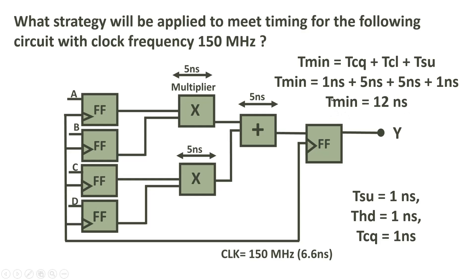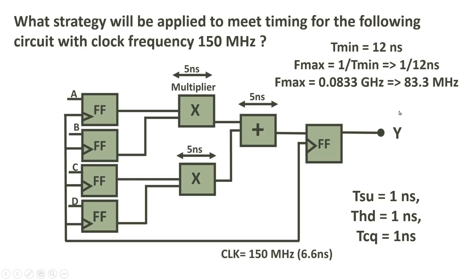Friends, here the minimum period of operation is 12 nanosecond. We cannot reduce the time period further. 12 is the minimum time period. And from here, very easily we can calculate the maximum operational frequency. Maximum operational frequency is equal to 1 by T minimum. So which is 1 by 12 nanosecond. So Fmax will be equal to 83.3 megahertz. But our target is 150 megahertz. So answer to your first question is, it cannot work at 150 megahertz.